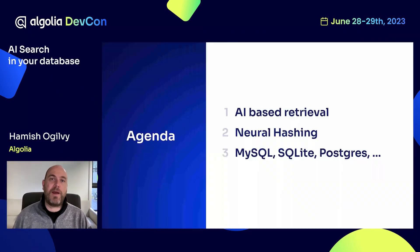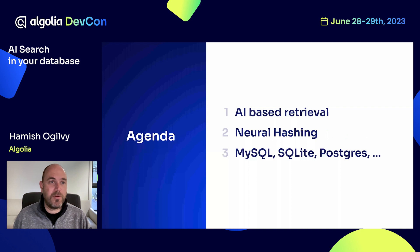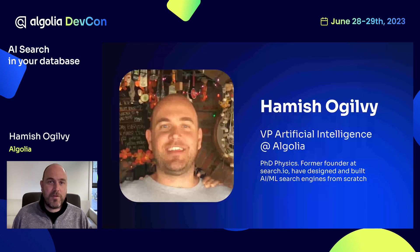Hi everyone. I'm here today to talk to you about AI search, but doing it within your existing database. There are a couple of things: AI-based retrieval, a general background on how that works, neural hashing — which is my favorite method for doing AI search — and then we're going to see how this works when you plug it into some common databases such as MySQL, SQLite, and Postgres. My name is Hamish, I'm the VP of AI at Algolia.